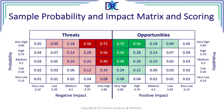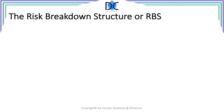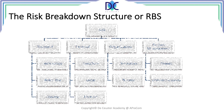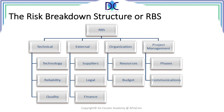The last thing we set up is the Risk Breakdown Structure, or RBS. Typically the RBS has four elements: technical elements, external elements, risks related to the organization, and risks related to project management. We will discuss this in more detail in the next video. So that was it for the Plan Risk Management step — a very important step defining the baselines for how we are going to deal with risks.